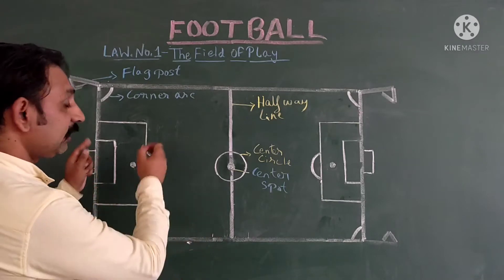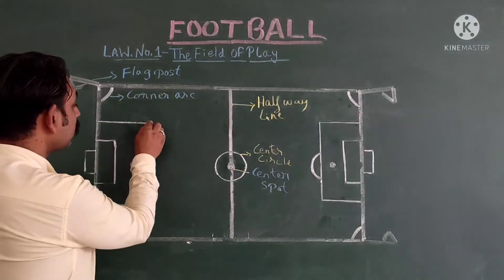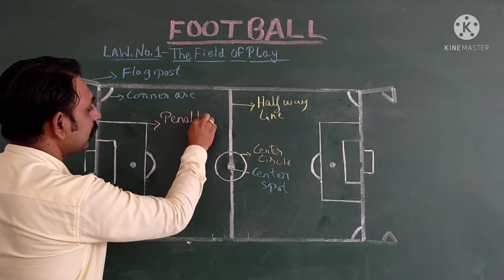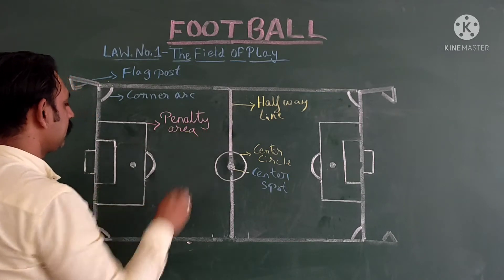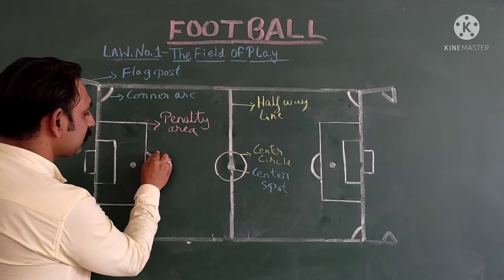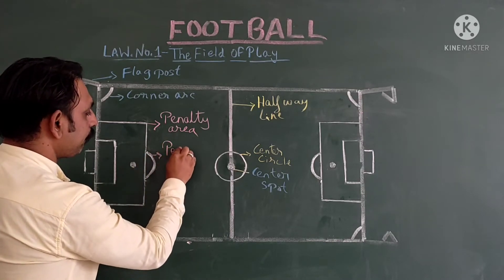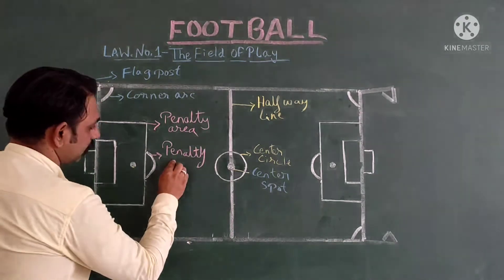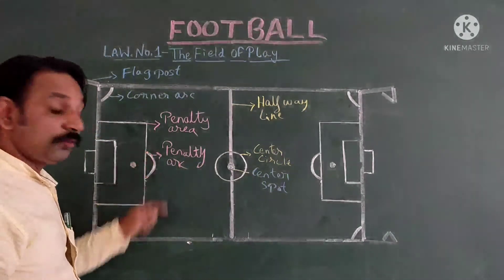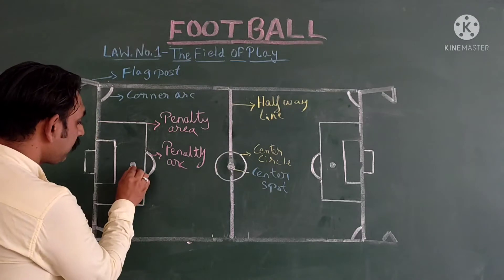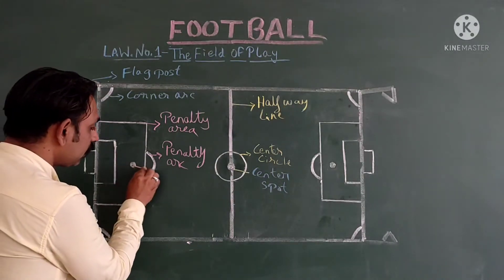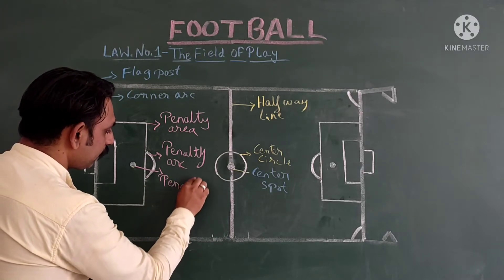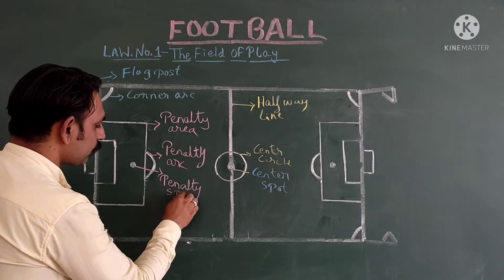Now let us know the big box. This big box is known as the penalty area. Then this arc is known as the penalty arc. Then we have a spot over here, and this spot is known as the penalty spot.